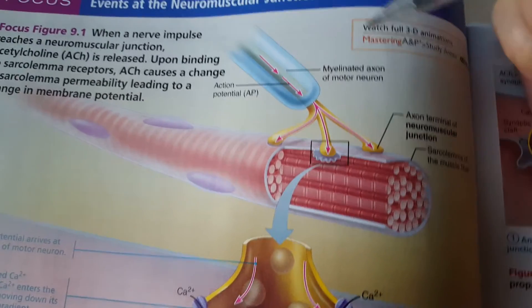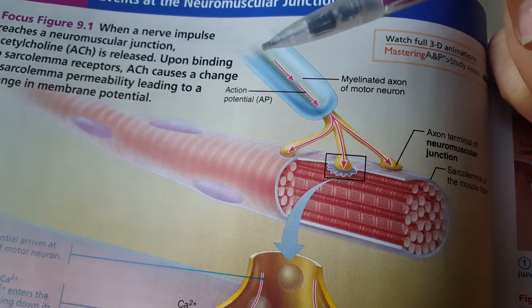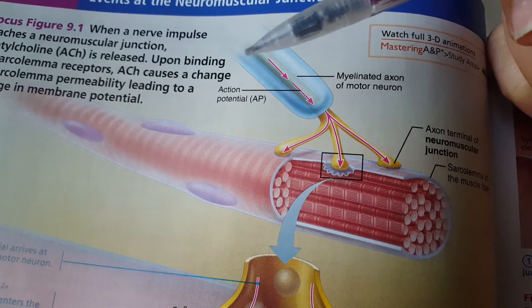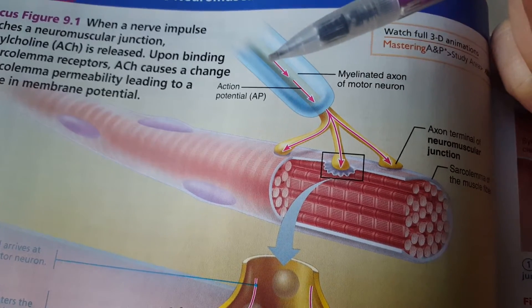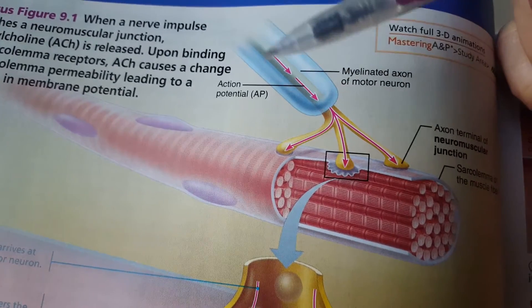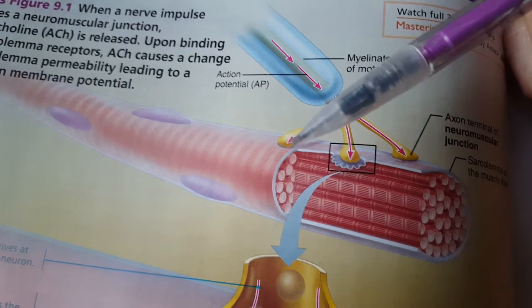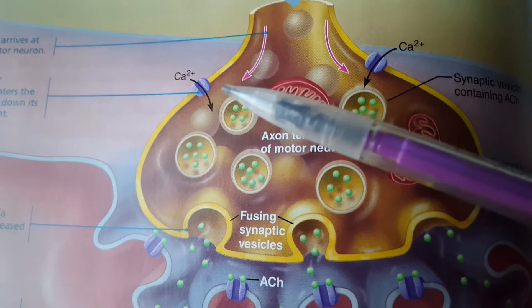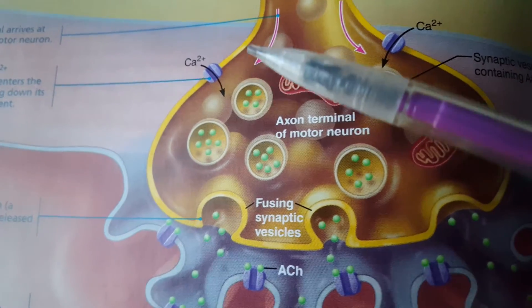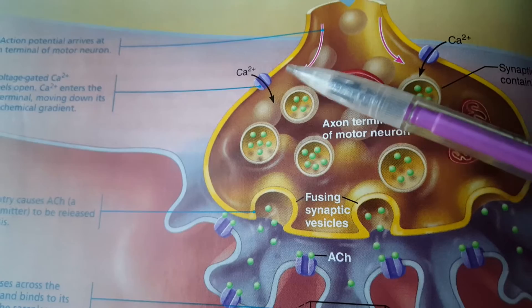At a neuromuscular or myoneural junction, we need a nerve impulse — an action potential. Remember, an action potential is just an electrical impulse. Here's that electrical impulse coming down the end of the axon to the axon terminal. When that electrical change travels down the axolemma — which is the plasma membrane of the axon, and actually the whole plasma membrane of the neuron — it changes the shape of the calcium voltage-gated channels.